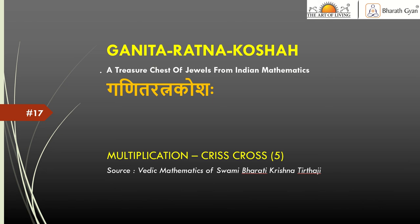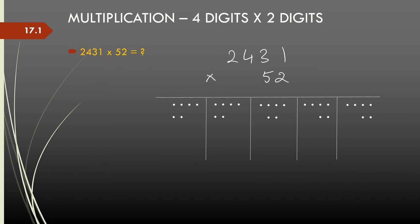Hello everybody. Welcome back to the series on Indian Mathematics, Ganita Ratnakosha. We will continue looking at the application of crisscross multiplication. In the last video, we looked at how to multiply a three-digit number with a two-digit number. Now let us look at how we can extend the process to multiply a four-digit number with a two-digit number and then a four-digit number with a three-digit number.